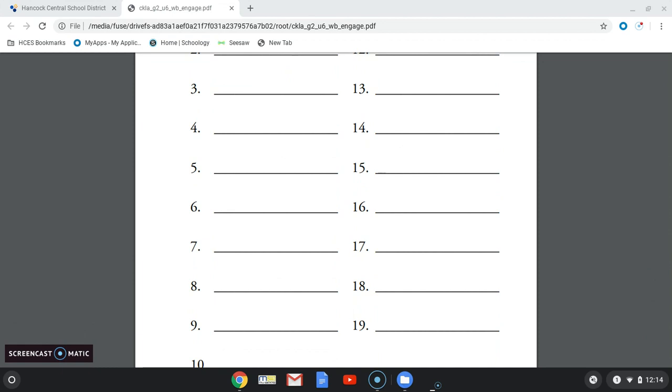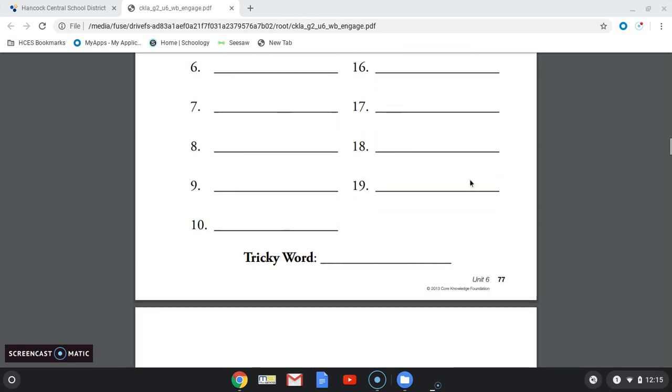Number 19, direction. You can choose the direction north or south. Direction. And number 20, our tricky word, Europe. Europe is one of our seven continents. Europe.